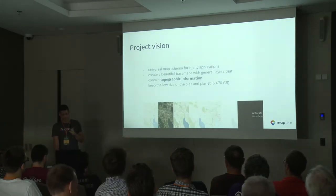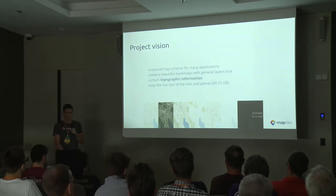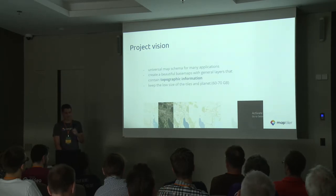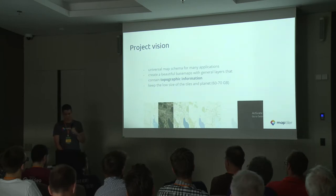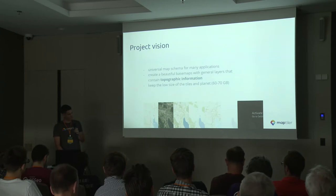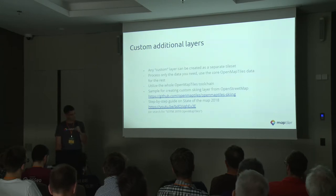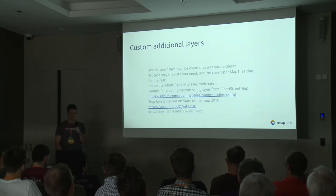Our project vision for the future is to have a universal map schema that is useful for everybody. We do not want to put everything in there because the size of the tiles would increase too much — tiles are downloaded to web browsers so we want to keep the schema at the right size for a base map useful for almost anybody. For special applications that need more, we have prepared an example on GitHub: the OpenMapTiles skiing repository, showing how to create one additional layer from OpenStreetMap.